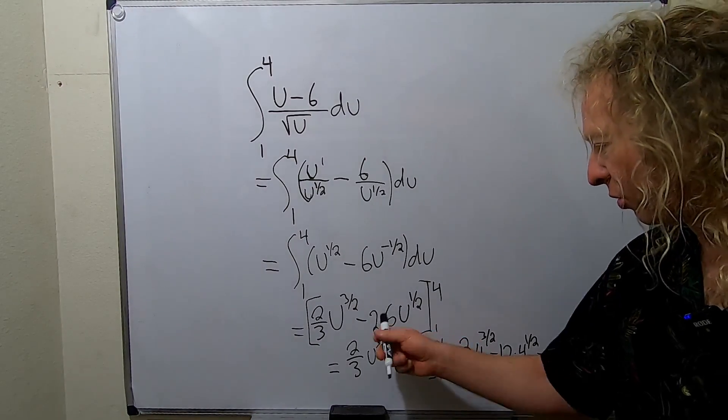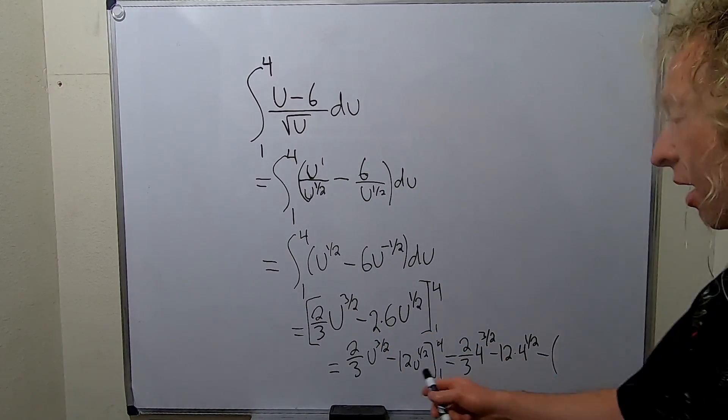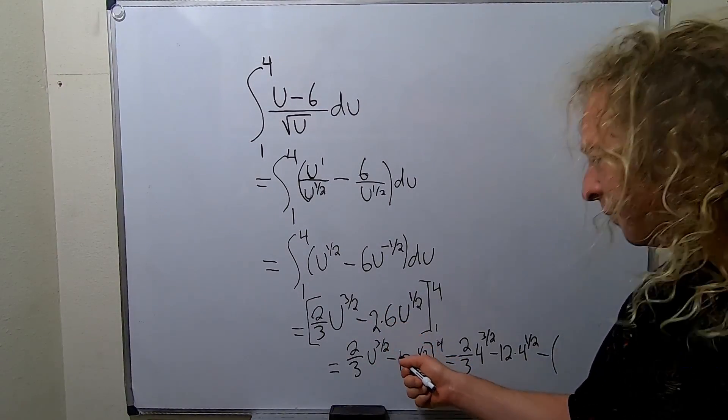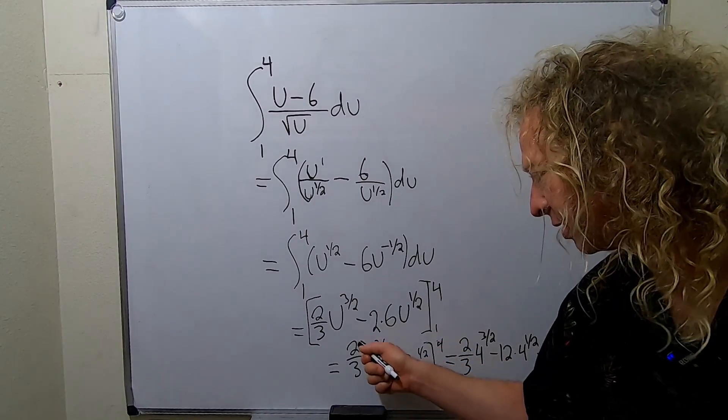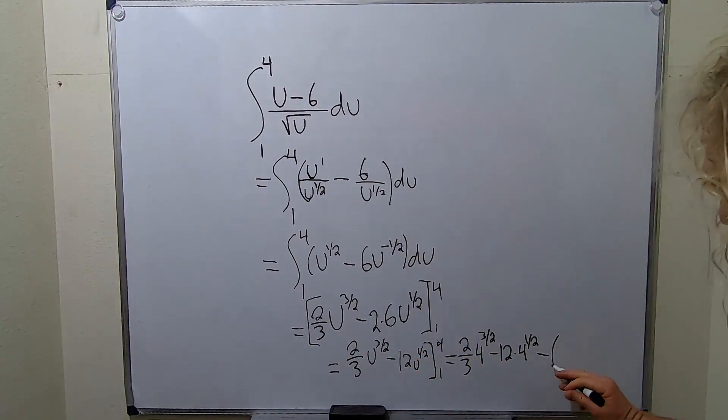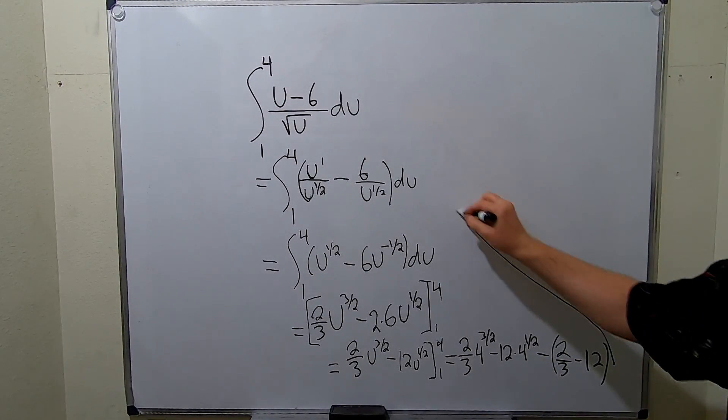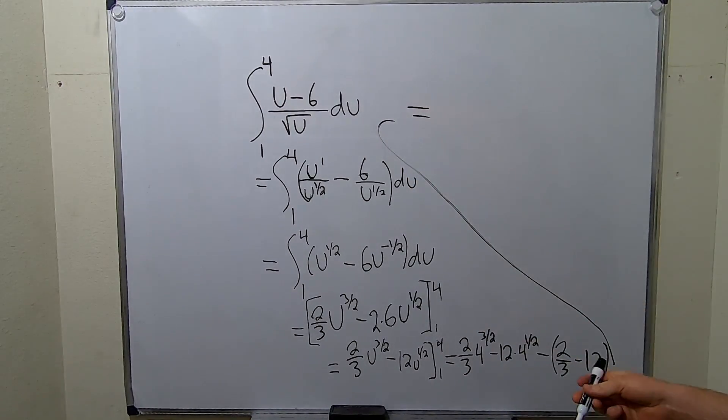Now we have to plug in the ones. That's going to be a little bit easier. Because whenever you put a 1 where the u is, it's just going to become 1, right? Because 1 to the 3 halves is 1. u to the 1 half is 1. So I'm just going to get 2 thirds minus 12. So 2 thirds minus 12. Yuck. Typically you get fractions in these problems. That's probably the most annoying part about these problems: the fractions.